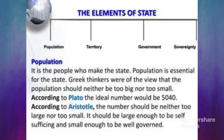Population — لوگ، افراد، آبادی۔ It is the people who make the state and the society. State is the organized form of society. With the passage of time and the development of knowledge, different political and Greek thinkers said there is a need to have a state. Population بہت important ہے ریاست کے لیے۔ Greek thinkers جیسے Plato اور Aristotle نے politics اور international relations میں بہت اہم کردار ادا کیا۔